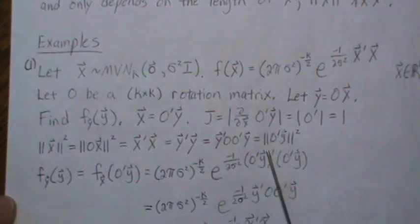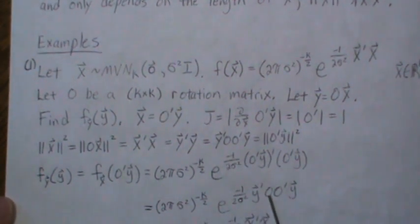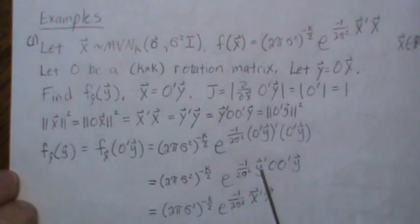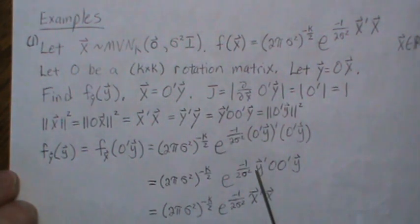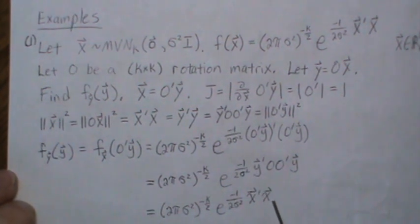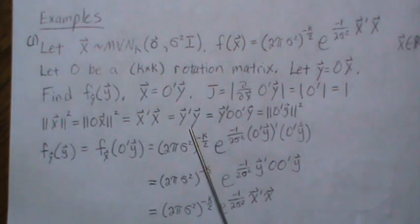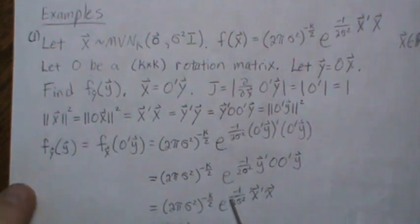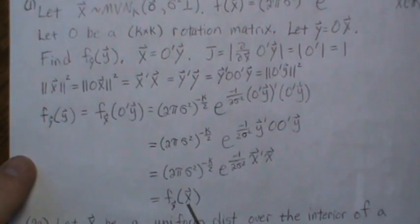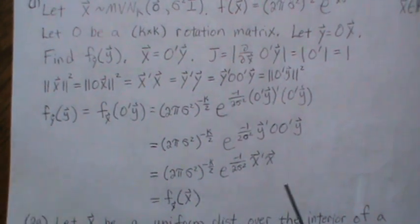Then you distribute that transpose and you get this, but that's the identity. Or you can think of it as this product has the same length as x. Or you can think of this as the identity and y transpose y has the same length as x. So really these functional forms are exactly the same, and so they're rotationally invariant.